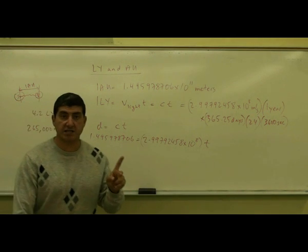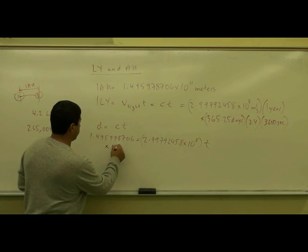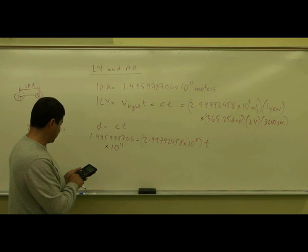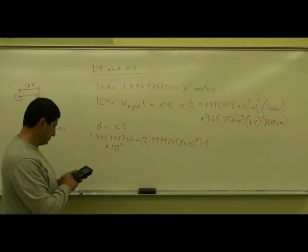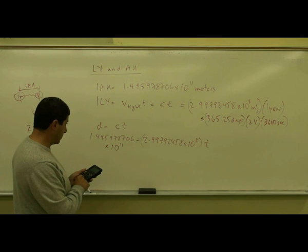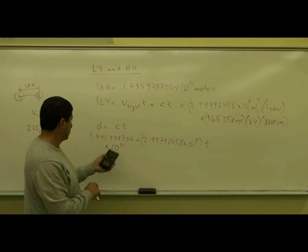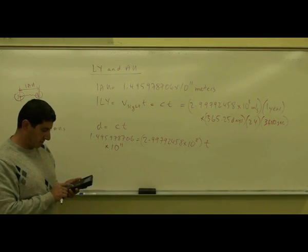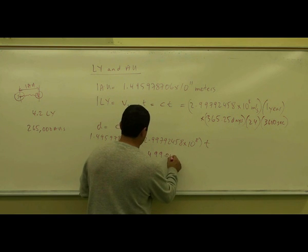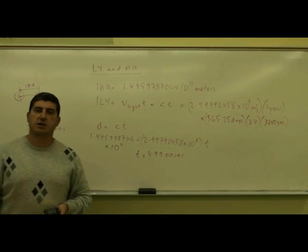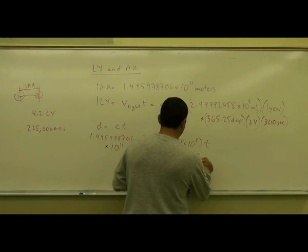This will tell us how many seconds it takes light to get to us from the Sun. So 1.495978706 divided by 2.99792458 times 10 to the 11th divided by 10 to the 8th is 10 to the 3rd. I get T is equal to 499.00 seconds. How many minutes is that? 60 seconds is 1 minute. 8.3 minutes.